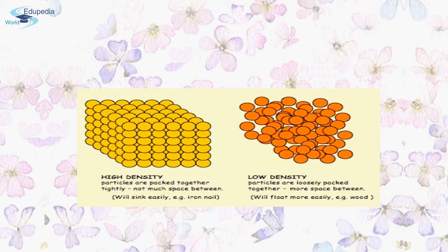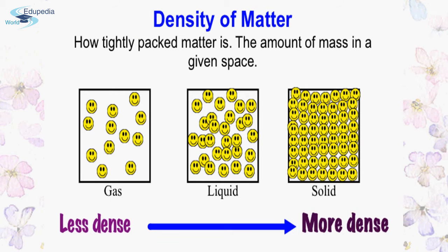Now let's consider all three physical states: gas, liquid, and solid. You can see the differences in density across these three physical states. Density increases from gas to liquid to solid — gases have the lightest density, then liquids, and solids have the highest density. The density of a substance depends upon the packing arrangement of its molecules.